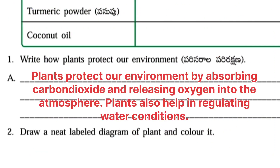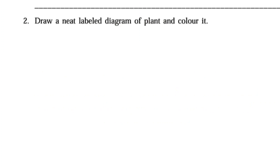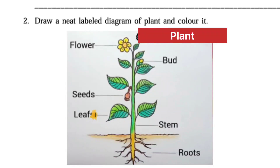Next one: write how plants protect our environment. Answer: Plants protect our environment by absorbing carbon dioxide and releasing oxygen into the atmosphere. Plants also help in regulating water conditions. Next, draw a neat labelled diagram of a plant and colour it. Here I have given a plant diagram — you have to draw it and colour it.